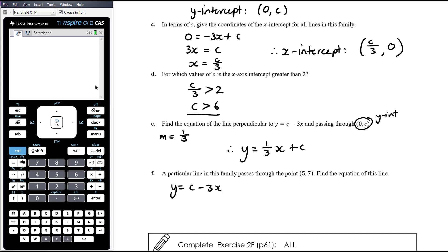It goes through the point 5,7. So that means when x equals 5, y equals 7. So let's sub that into our equation. So 7 equals c minus 15, which means that c equals 7 plus 15, which is 22. And so therefore the equation of that line is 22 minus 3x. So it's part of this family. I'm sorry, it's part of the original family. And it goes through the point 5,7.